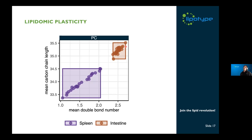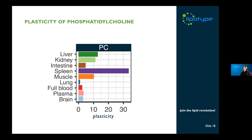For example, spleen has quite a high range of double bond numbers and hydrocarbon chain length. Intestine, on the other hand, has quite a narrow range. We multiplied the range of double bond numbers by the range of hydrocarbon chain lengths to get a number for lipidomic plasticity. Showing only phosphatidylcholine: lung has very low plasticity of PC, most likely because there are very specific requirements for lung PC composition as it serves as a surfactant and can only do so with a narrow lipid species composition. Liver and spleen show much larger variety and therefore higher plasticity.